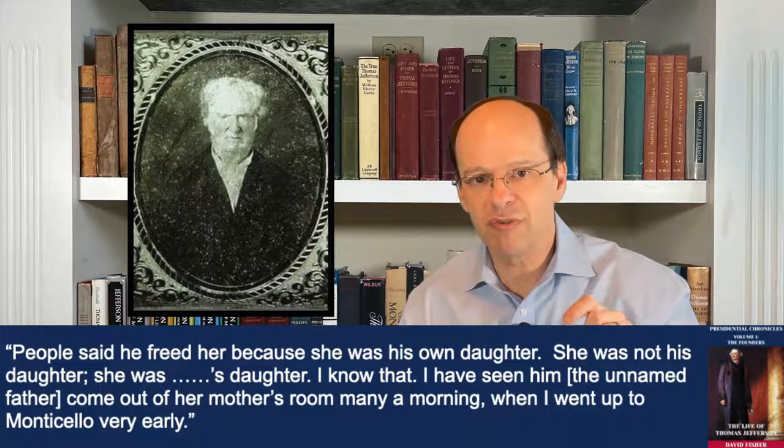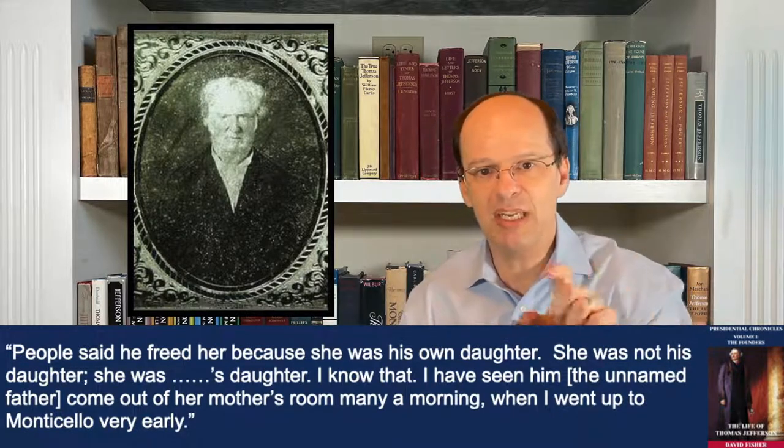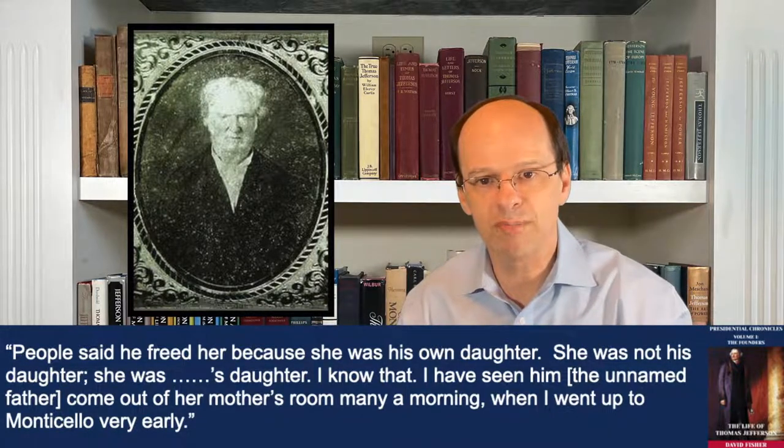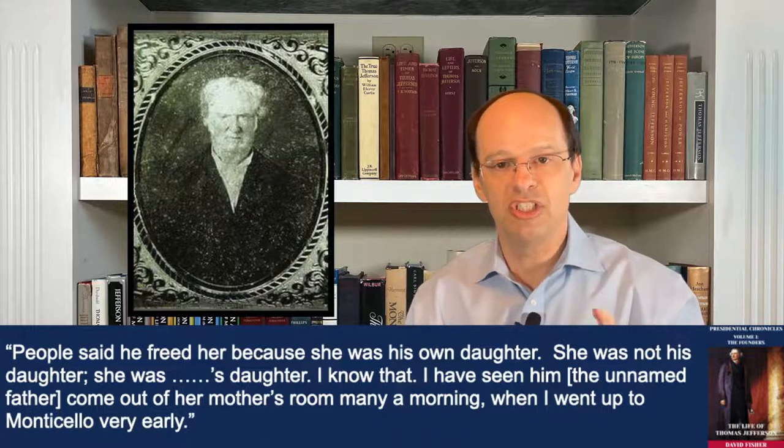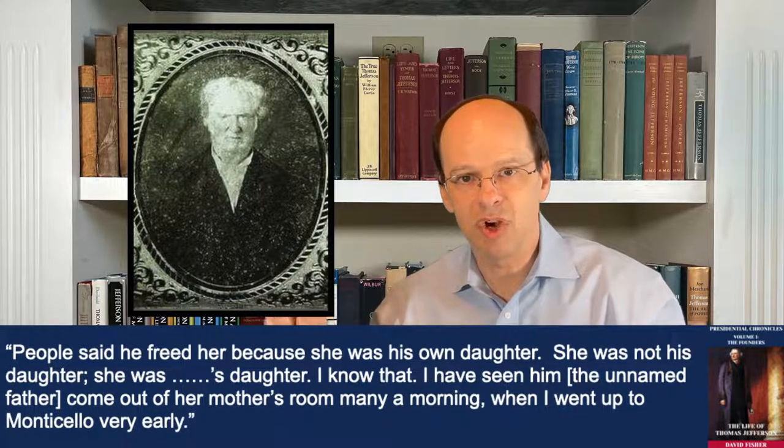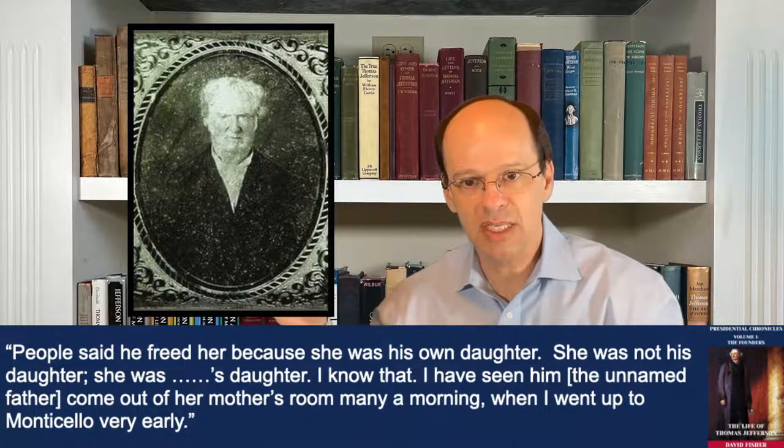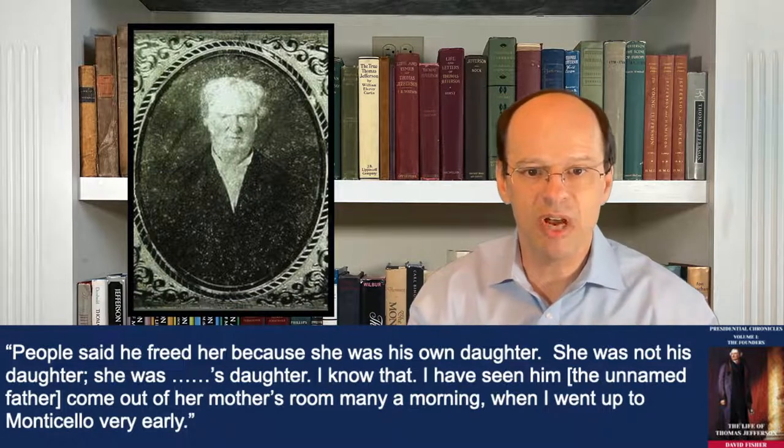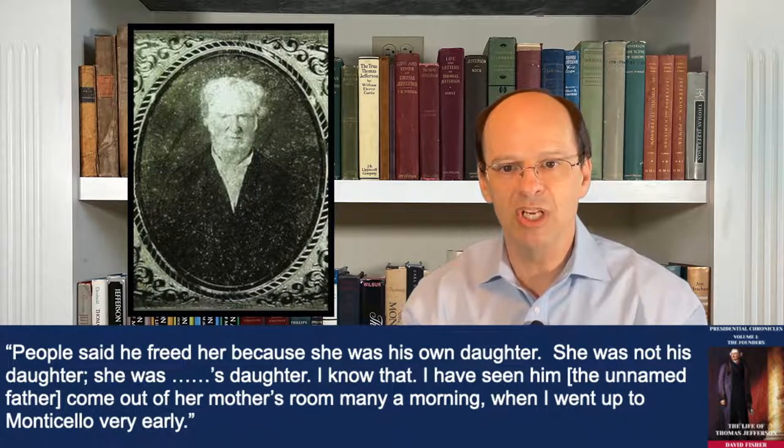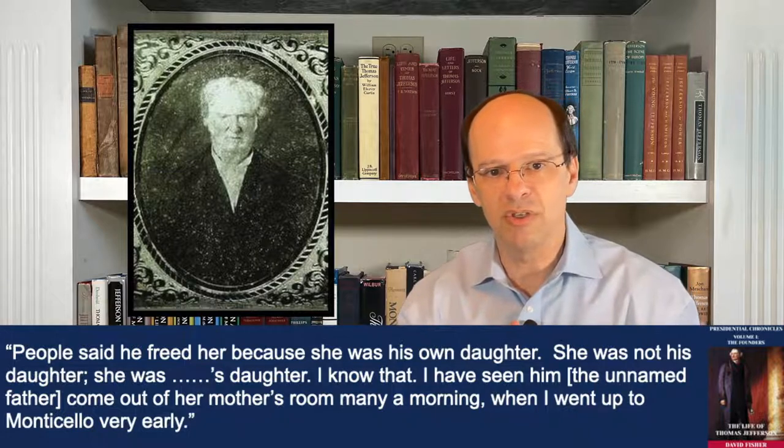Historians have taken this statement as gospel. And you want to take somebody off track, come up with a story to convince people why you never marry again or have any other romantic relationship ever again. This is a very plausible story. Well, there's another part of story in this book where Bacon talks about the departure of Harriet Hemings. And he says explicitly that he offers, sort of without prompting, that people said he, Jefferson freed her Harriet. People said he freed her because he was his own daughter. She was not his daughter. She was dot, dot, dot's daughter. That's how it appears in the book, dot, dot, dot's daughter. I know that. I have seen him, the unnamed father, come out of her mother's room many a morning when I went up to Monticello very early.